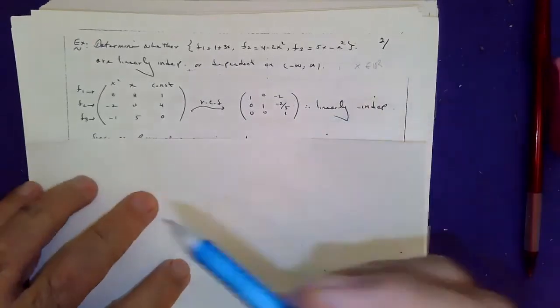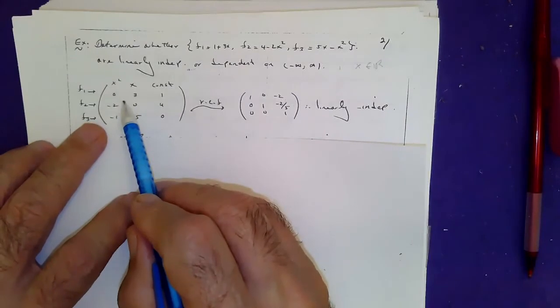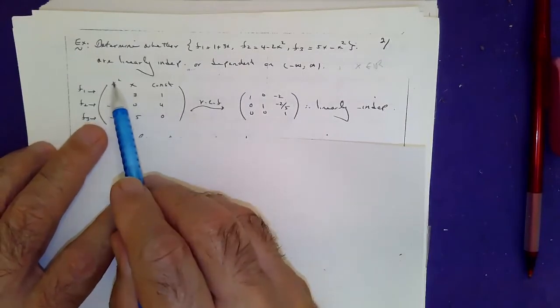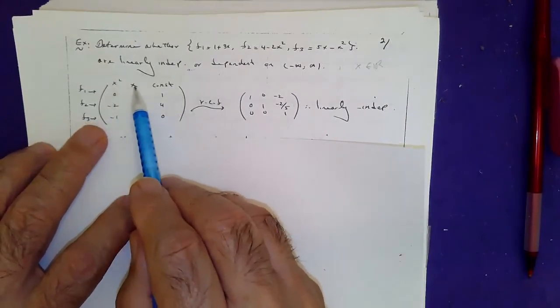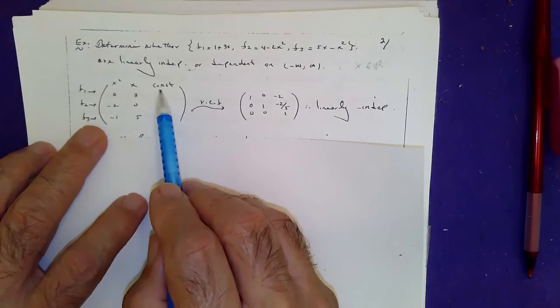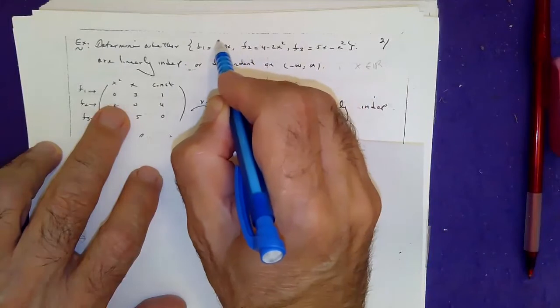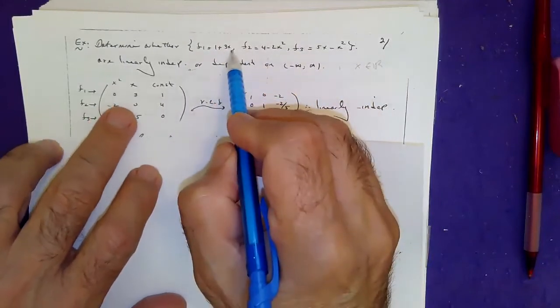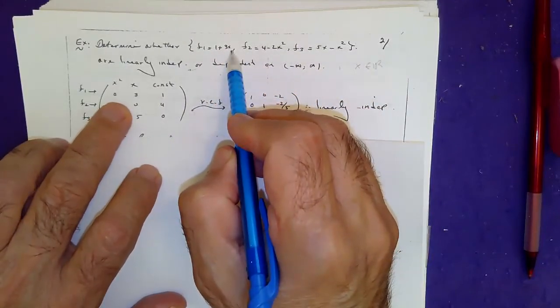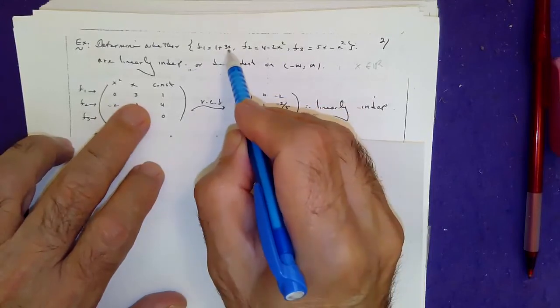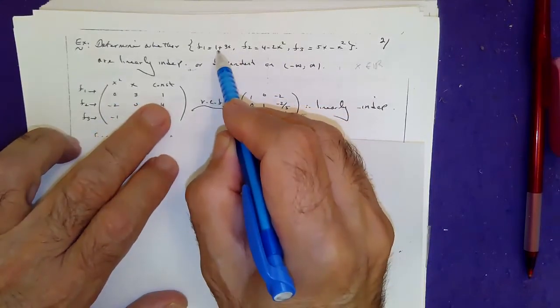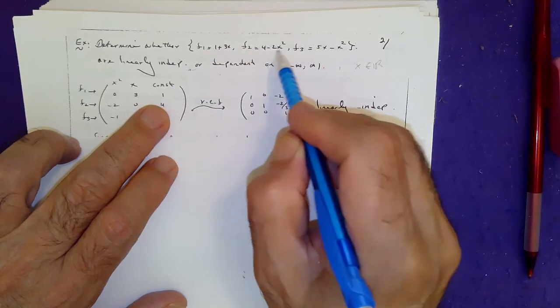And this is how you make a special matrix. So you go x squared column, x column, constants. For function f1, notice there is no x squared, so it's zero. Coefficient of x is three, constant is one. For function number two, coefficient of x squared is negative two. There is no x, so zero, constant is four.